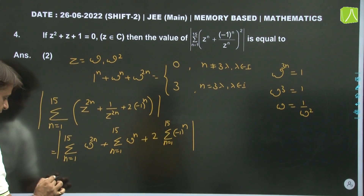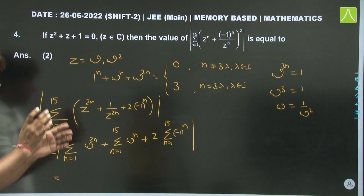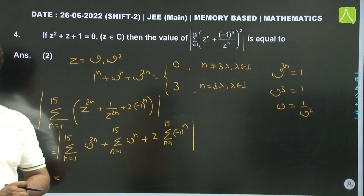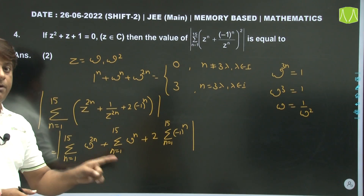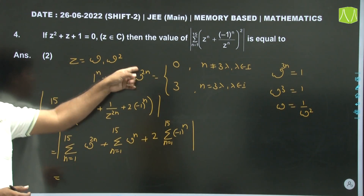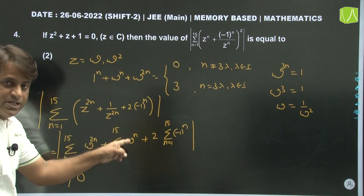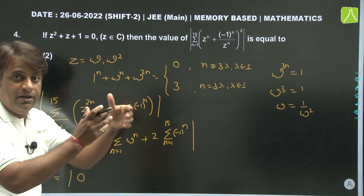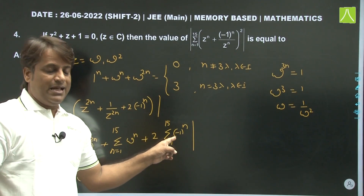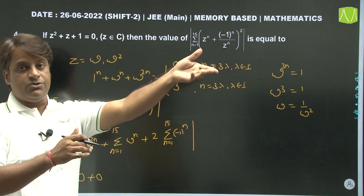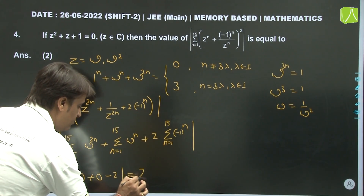For the (-1)ⁿ summation from n=1 to 15: the terms alternate -1, +1, -1, +1... with 15 terms starting and ending with -1. Pairs cancel, leaving the last term -1. So 2 × (-1) = -2. Taking absolute value, the answer is 2. The second option is correct.